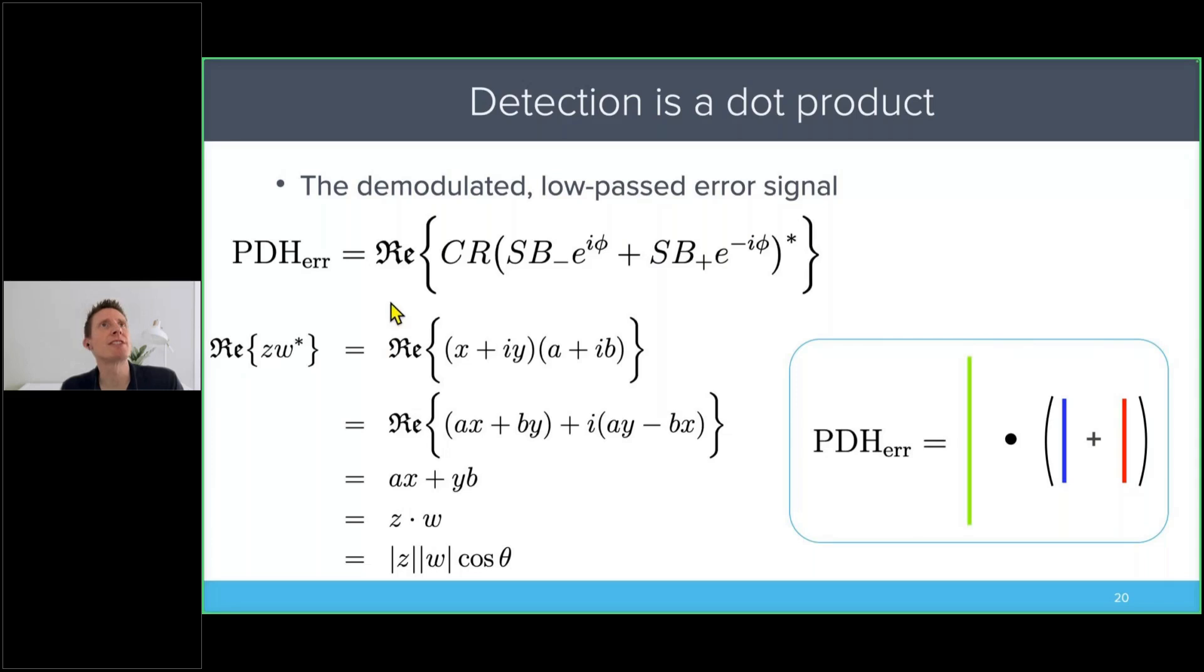With this knowledge, if we return to the first expression, we see that we have some complex number, complex number conjugated. And if we make the connection, we'll find that the PDH error signal is nothing other than the dot product between the carrier phasor and the sum of the two sideband phasors.